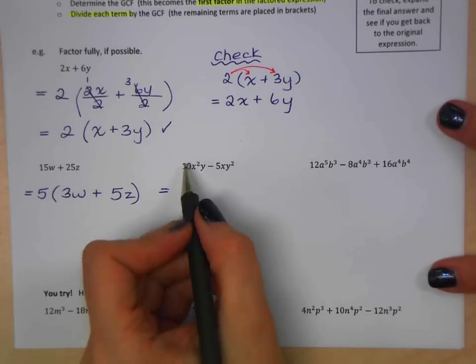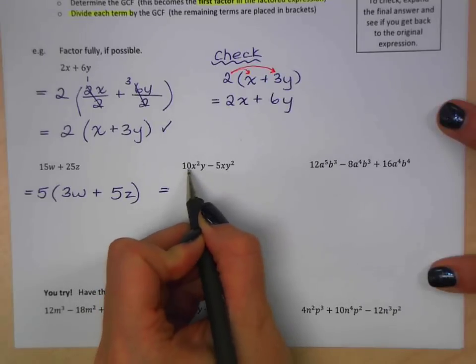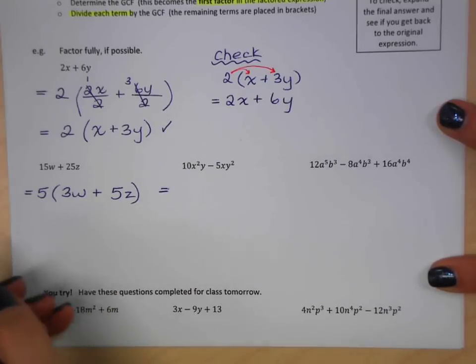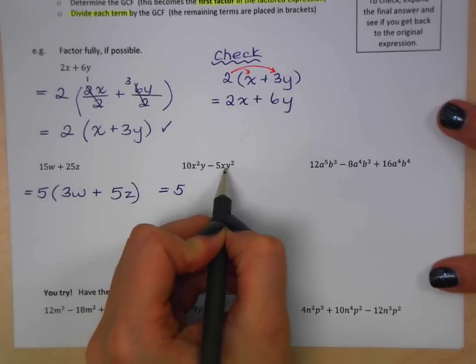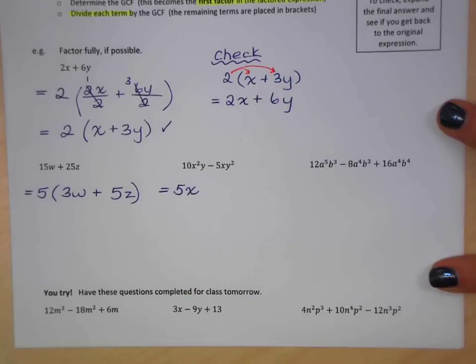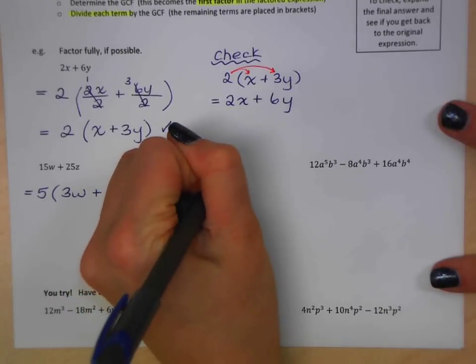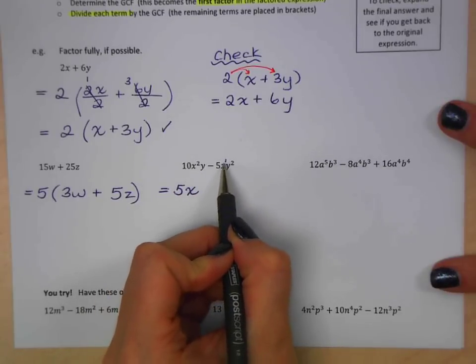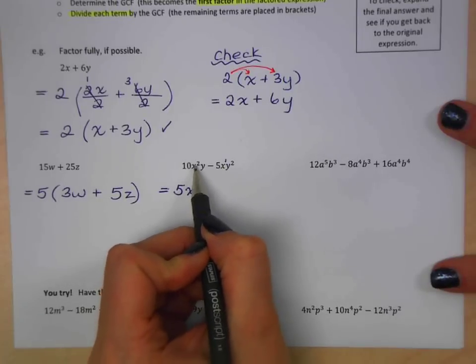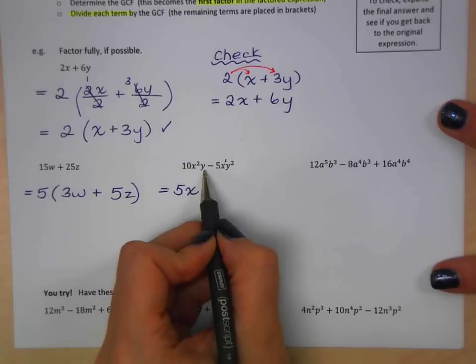Let's try the next one. So the greatest common factor between 10x squared y minus 5xy squared. Let's look at the coefficients first. 10 and 5. The greatest one is 5. Next, I need to look at my variables. So I've got an x in both terms, so I know that I can divide out an x. And the easiest way to do this is just to say, okay, what's the lowest exponent that I have? Remember, I've got that invisible 1. So that's the lowest exponent, which means that I can only divide out 1x from this one.